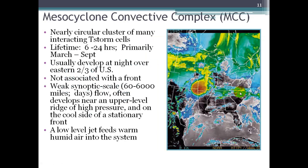The second type of multicellular thunderstorm is called a Mesoscale Convective Complex, or MCC. These are nearly circular clusters of multiple interacting thunderstorm cells. They can last anywhere from 6 to 24 hours and typically occur during the warm season in North America, from March to September. They often develop at night over the eastern two-thirds of the United States.